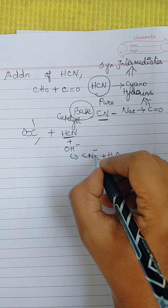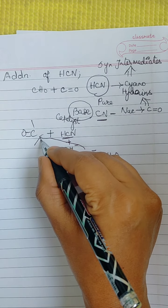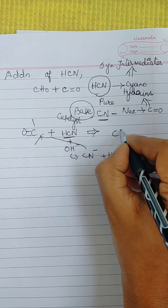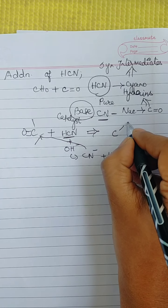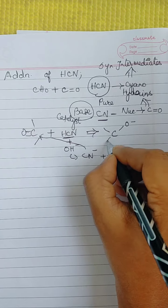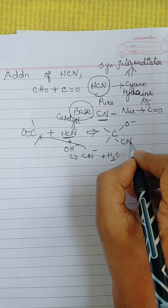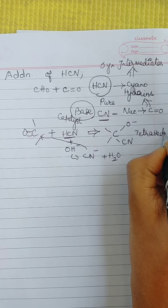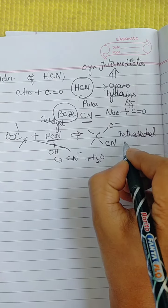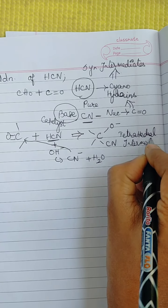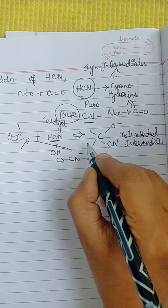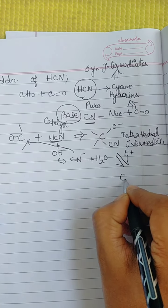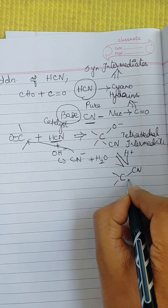As a result I will get a potent cyanide nucleophile plus a water molecule. This cyanide will attack the carbonyl carbon of aldehyde or ketone. The C=O becomes C–O⁻ and cyanide attacks the carbonyl carbon, forming a tetrahedral intermediate. This tetrahedral intermediate will then be converted to the product — cyanohydrin.